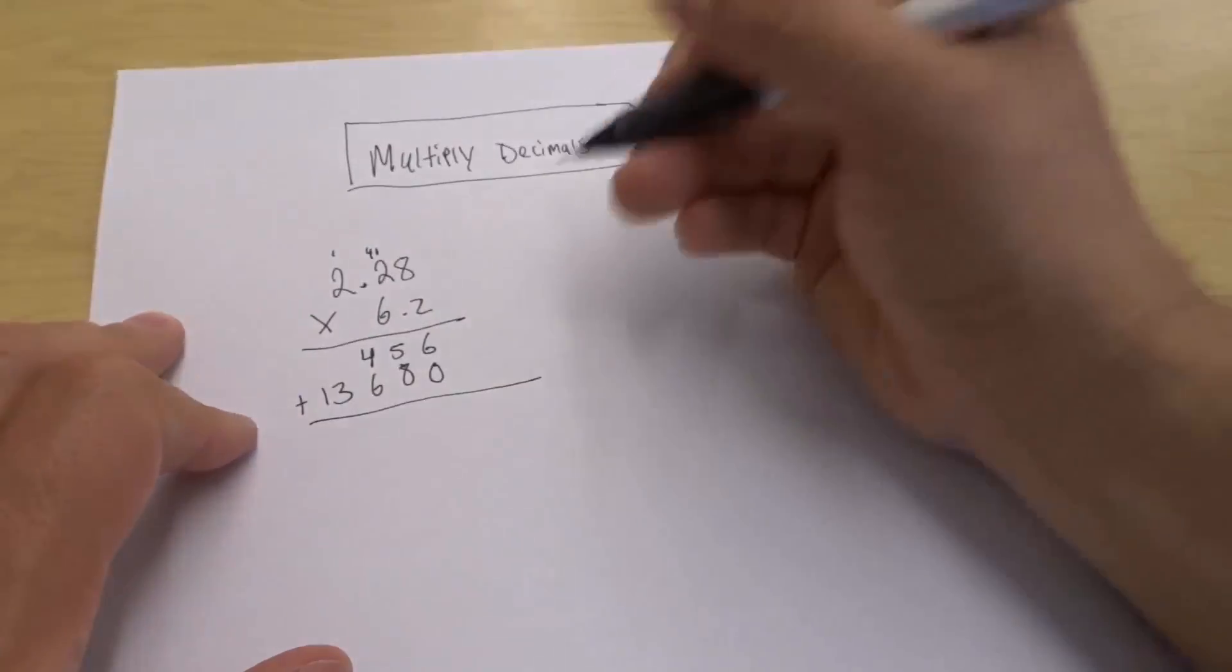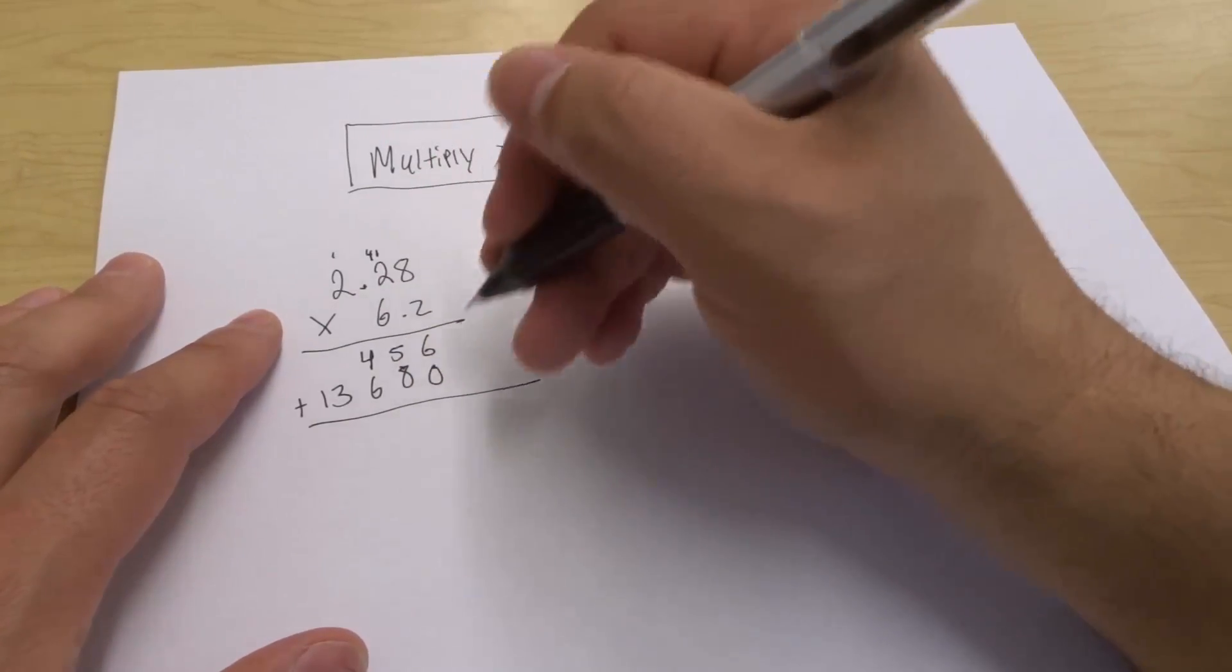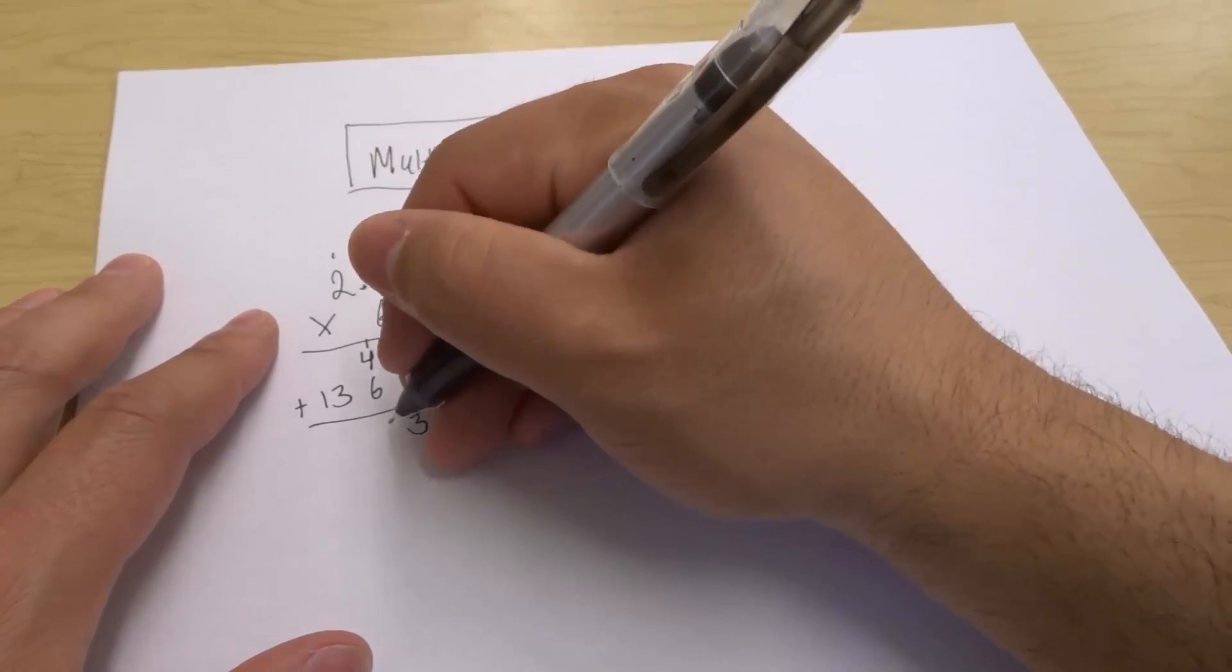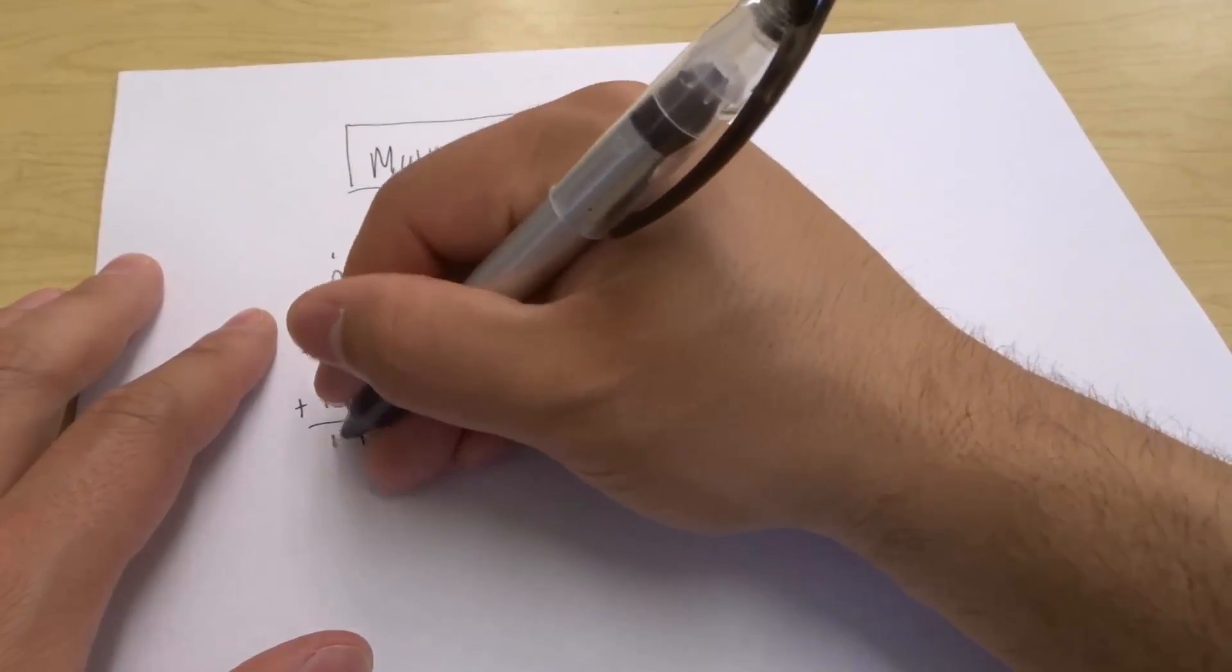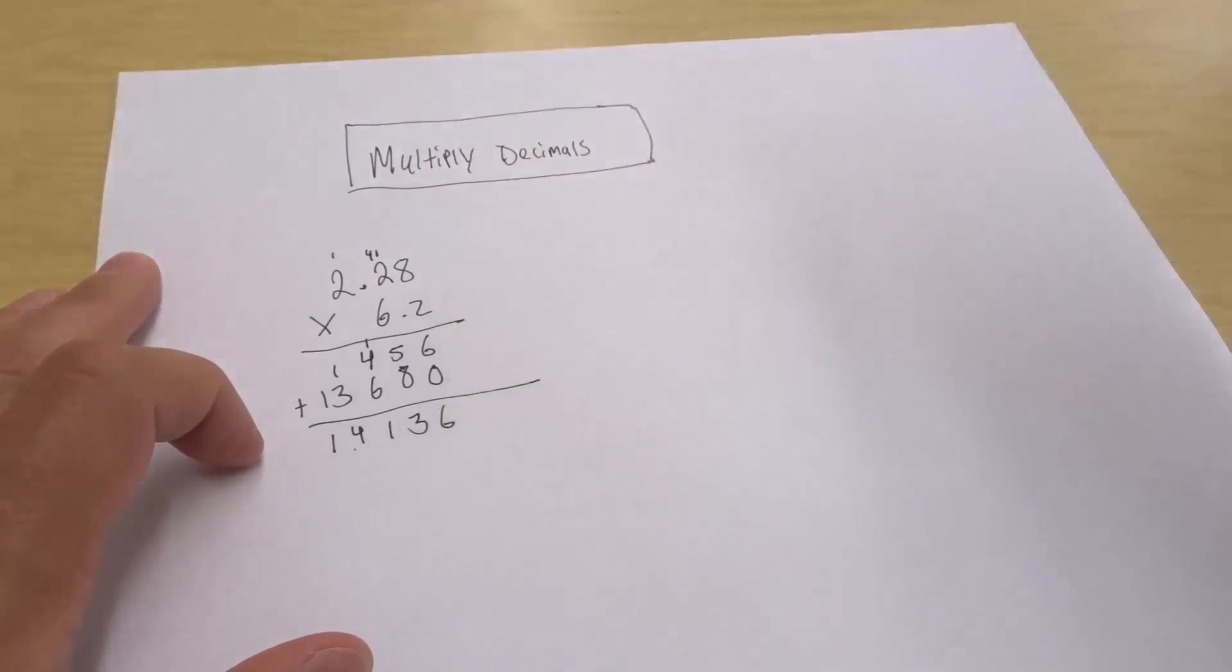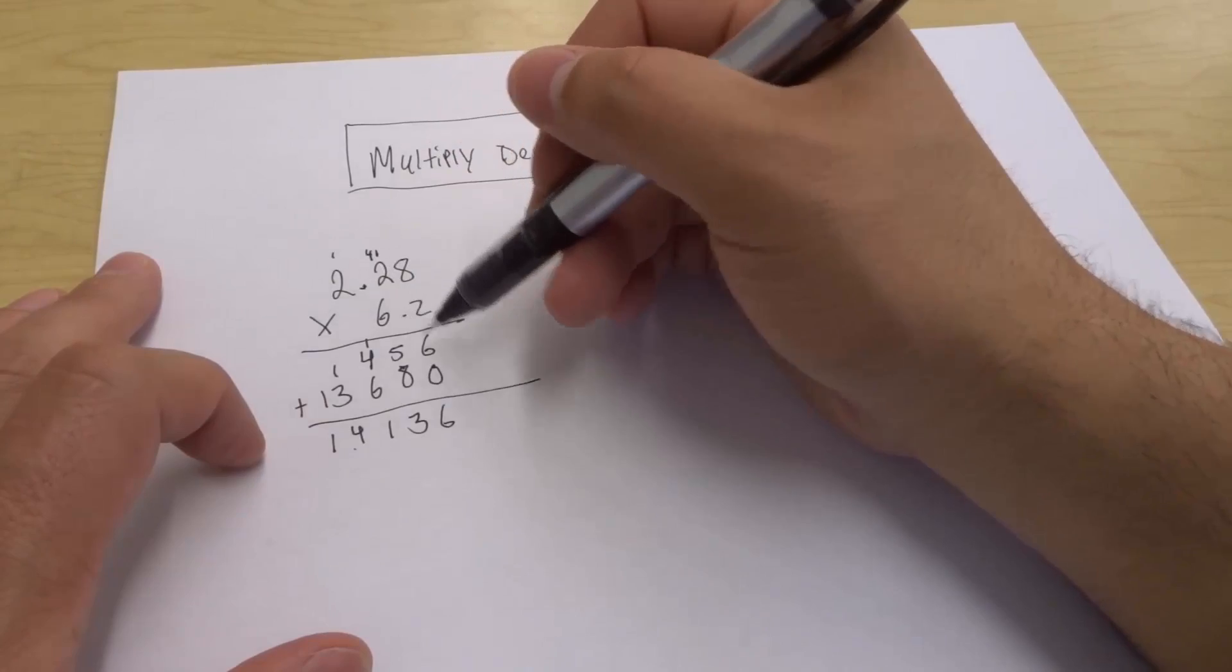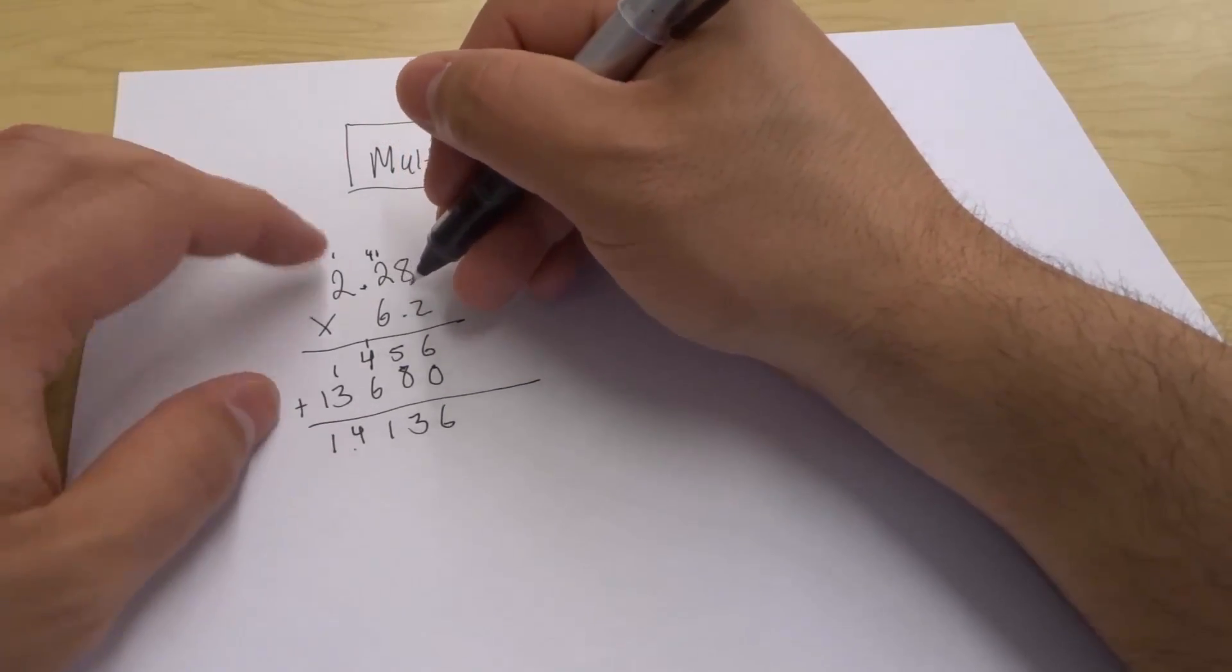What we have to do is add these together. This is just regular multiplication as if there were no decimals. 6 plus 0 is 6, 5 plus 8 is 13, 4 plus 6 is 10 plus 1 is 11, 3 plus 1 is 4, 1 plus 0 is 1. So now we have this number, but it's way too big. This number is 14,136, it's way too big. We need to now incorporate the decimal.